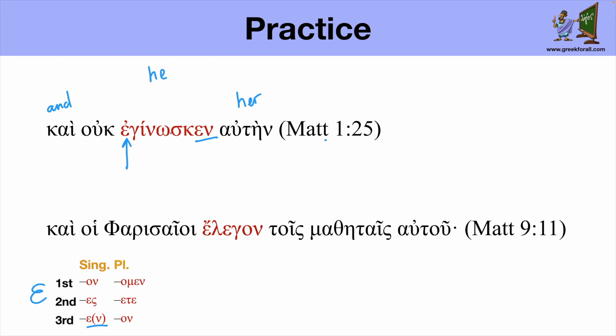So the literal translation and he was not knowing her. It doesn't sound right in English. When we work with the verb to know in English, we better say and he didn't know her. But this is imperfect. So it should be translated and he was not knowing her. And to know your wife means it's a euphemism for to have intimacy with her. And so here we can say and he was not having intimacy with her or he was not sleeping with her.